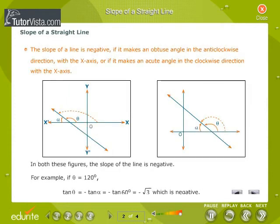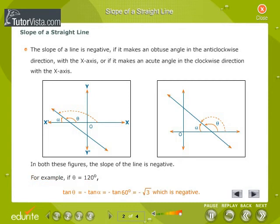The slope of a line is negative if it makes an obtuse angle in the anticlockwise direction with the x-axis, or if it makes an acute angle in the clockwise direction with the x-axis. In both these figures, the slope of a line is negative. For example, if theta is equal to 120 degrees, tan theta is equal to minus tan 60 degrees, which equals minus root 3, which is negative.